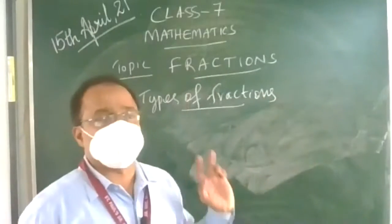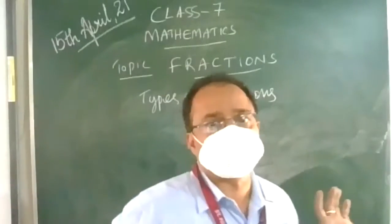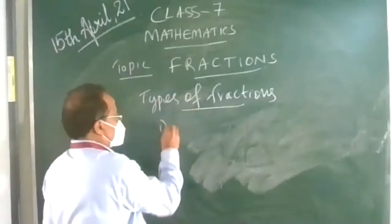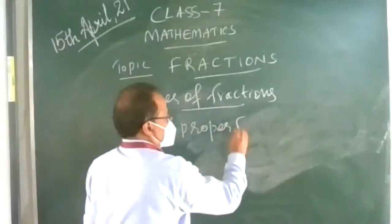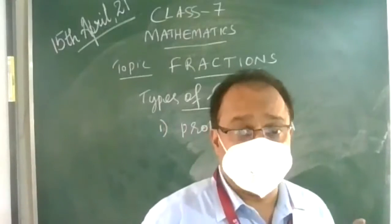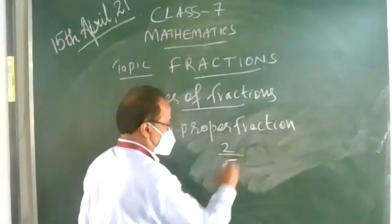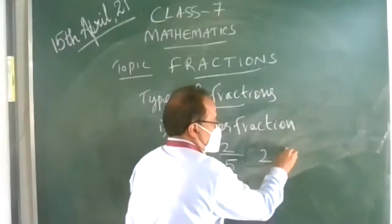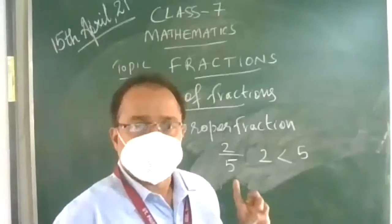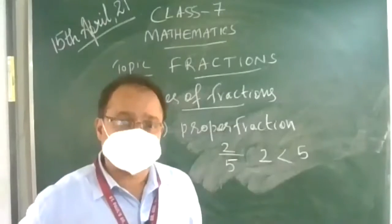Now, types of fractions. Fractions can be grouped into three major categories. First, proper fractions — fractions whose numerator is smaller than the denominator. For example, 2 upon 5: the numerator is smaller than the denominator. These kinds of fractions are called proper fractions. Always, the value of a proper fraction is less than 1.